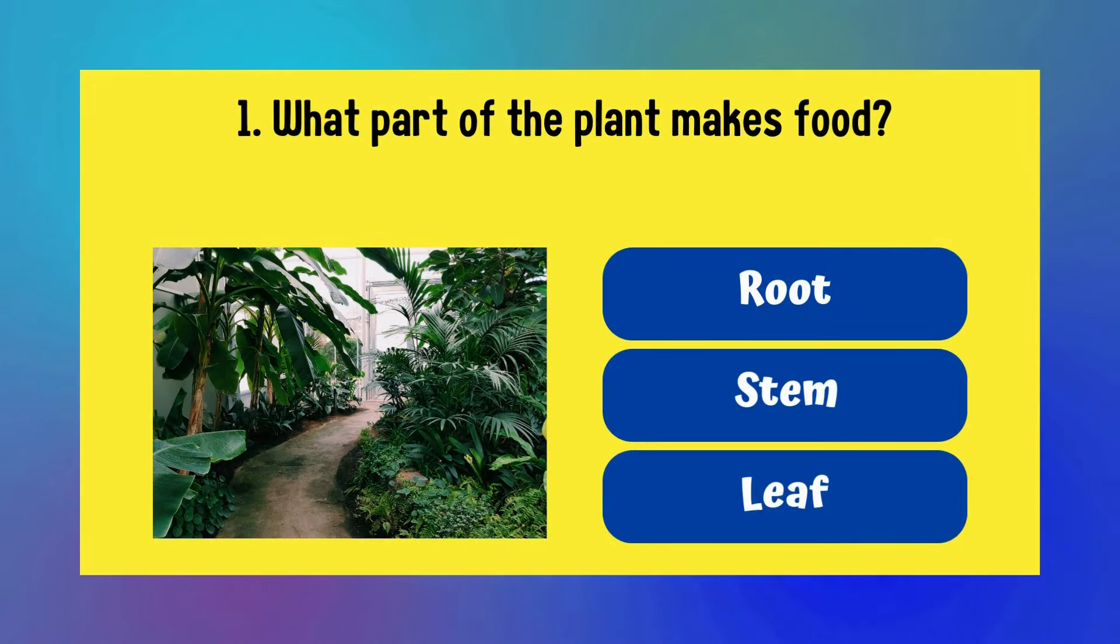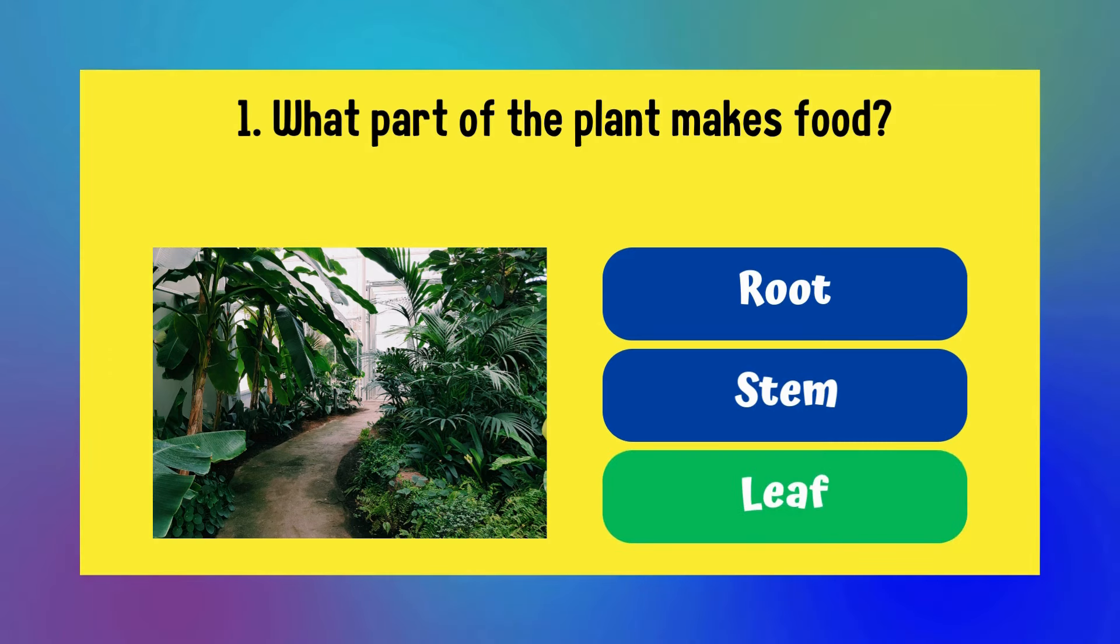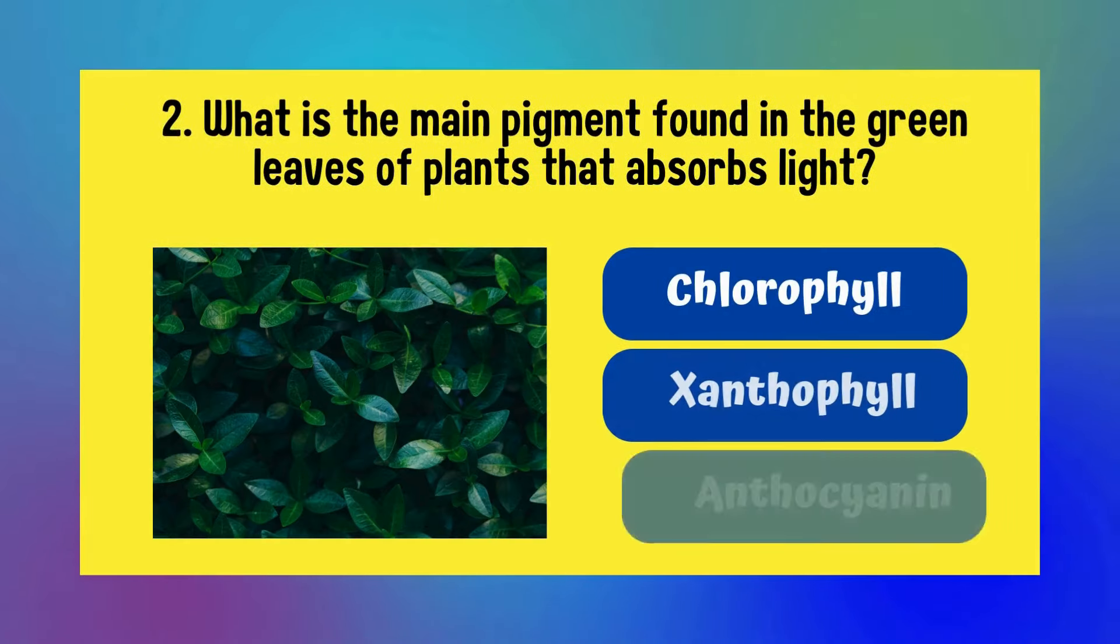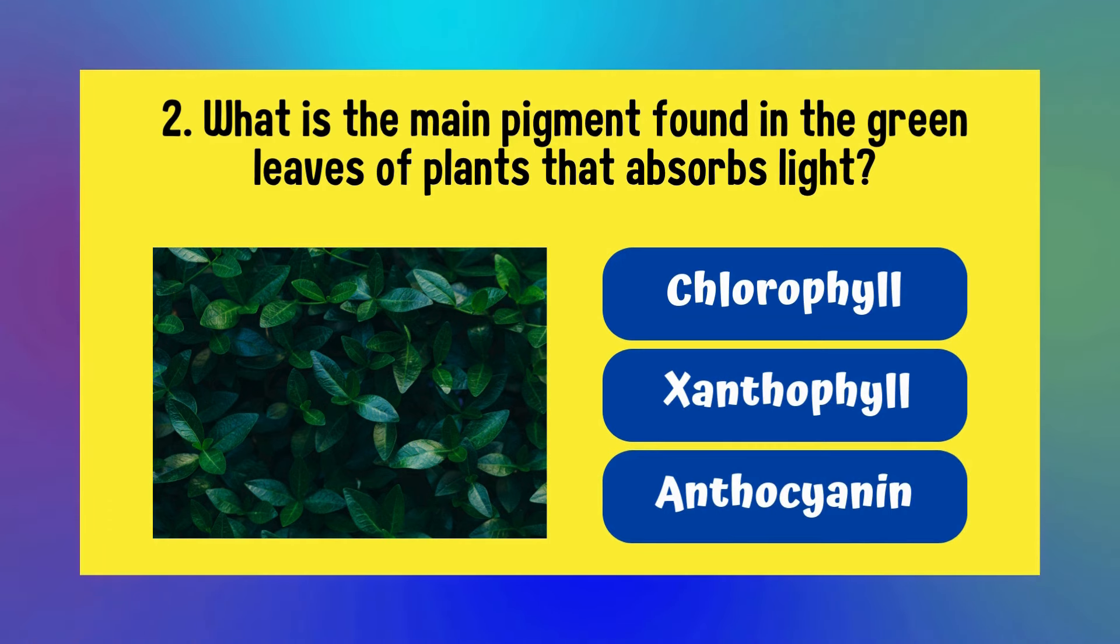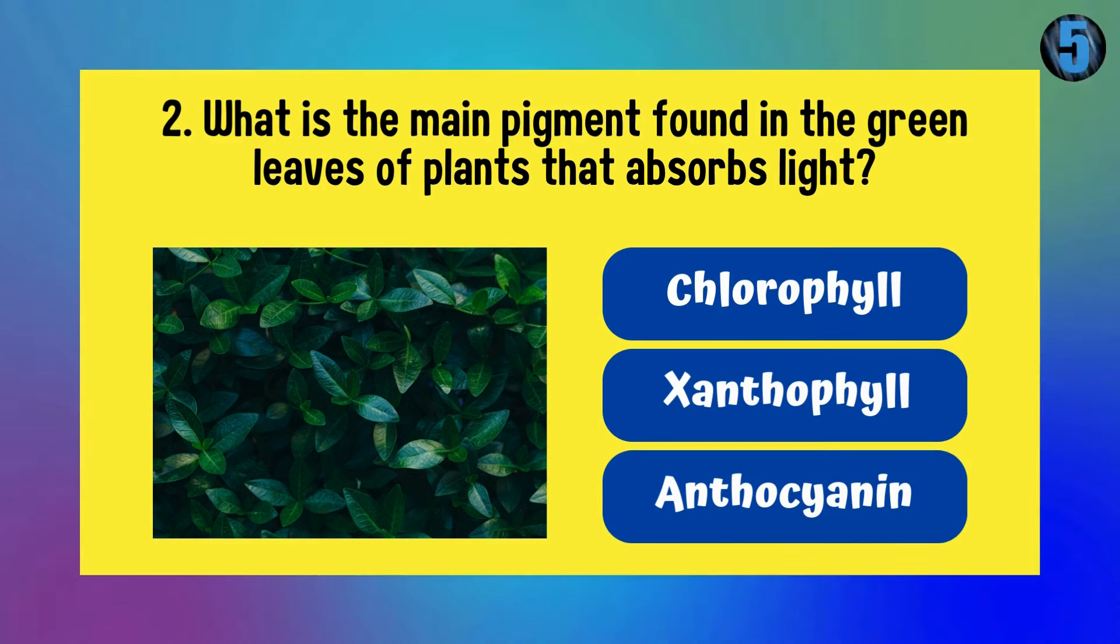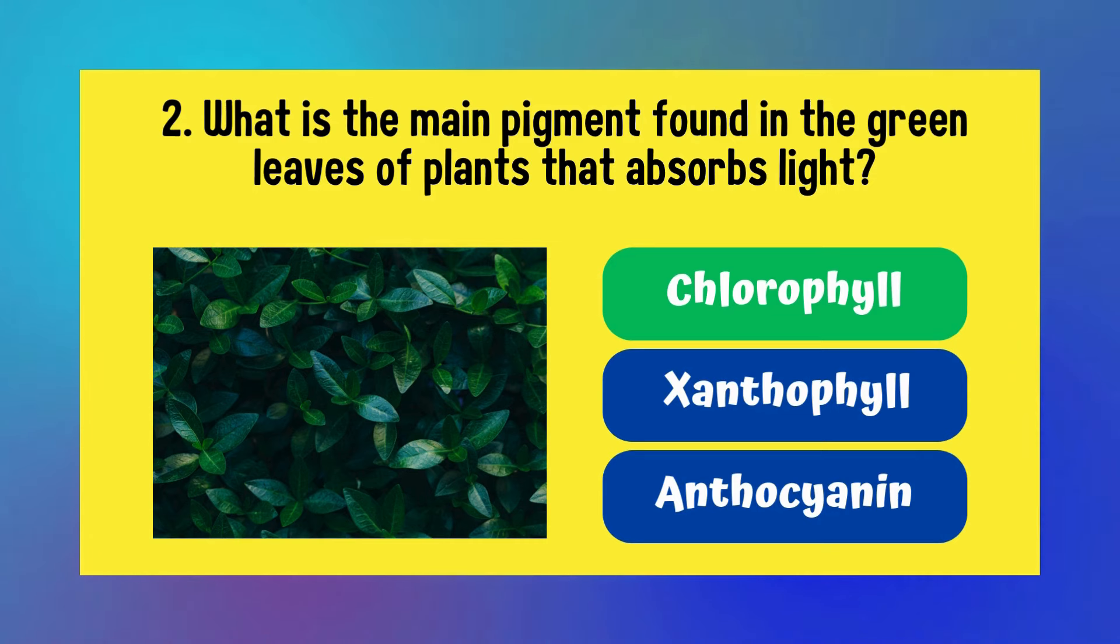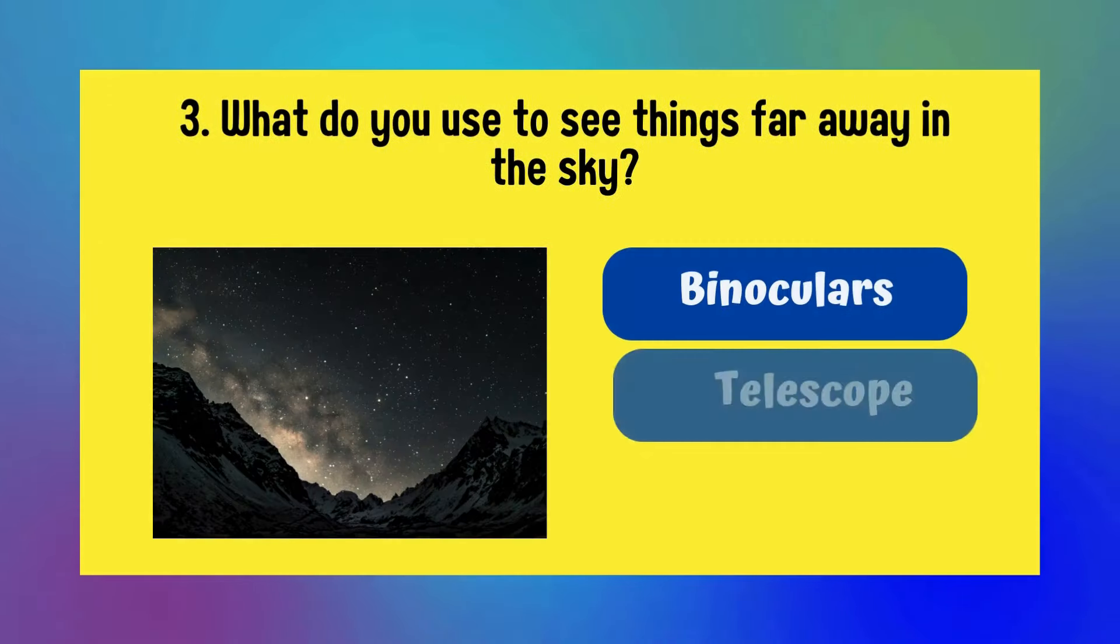What part of the plant makes food? Root, stem, or leaf? Answer is leaf. What is the main pigment found in the green leaves of plants that absorbs light? Chlorophyll, xanthophyll, or anthocyanin? It is chlorophyll.